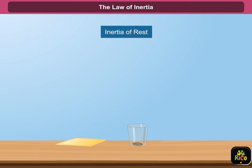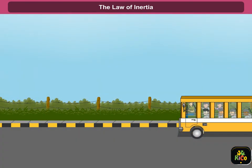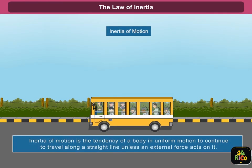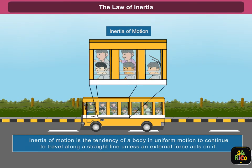You will notice that the coin falls vertically downwards. The coin does not move along with the cardboard; however, it falls downwards due to the force of gravity. The coin does not move with the cardboard because of the property of inertia of rest.